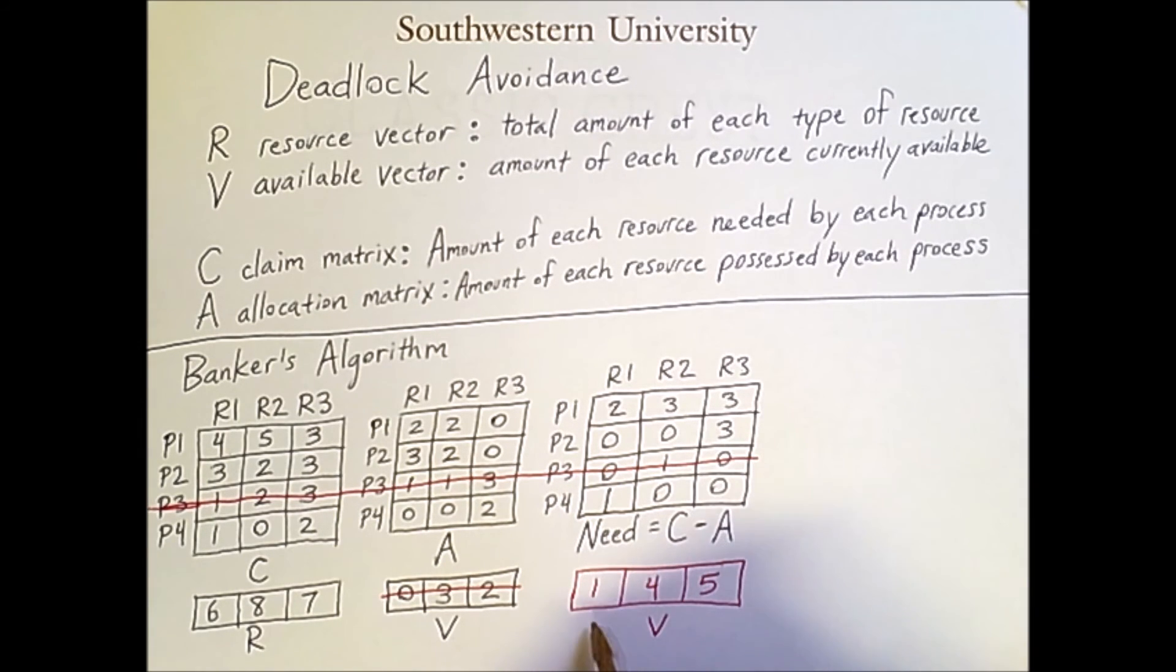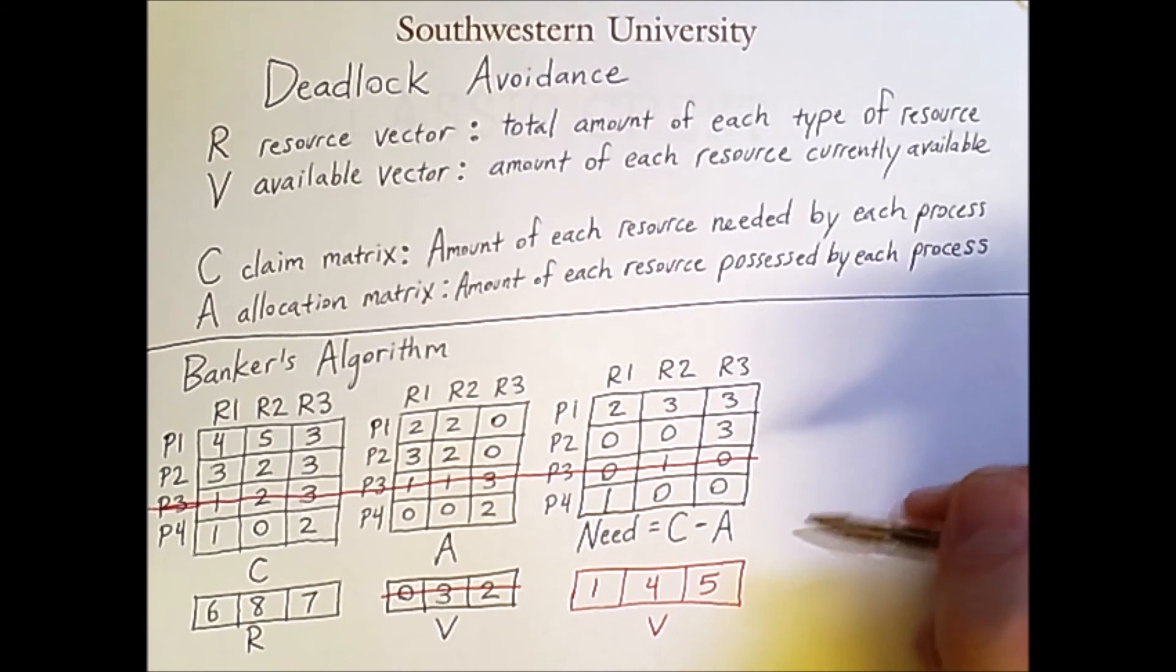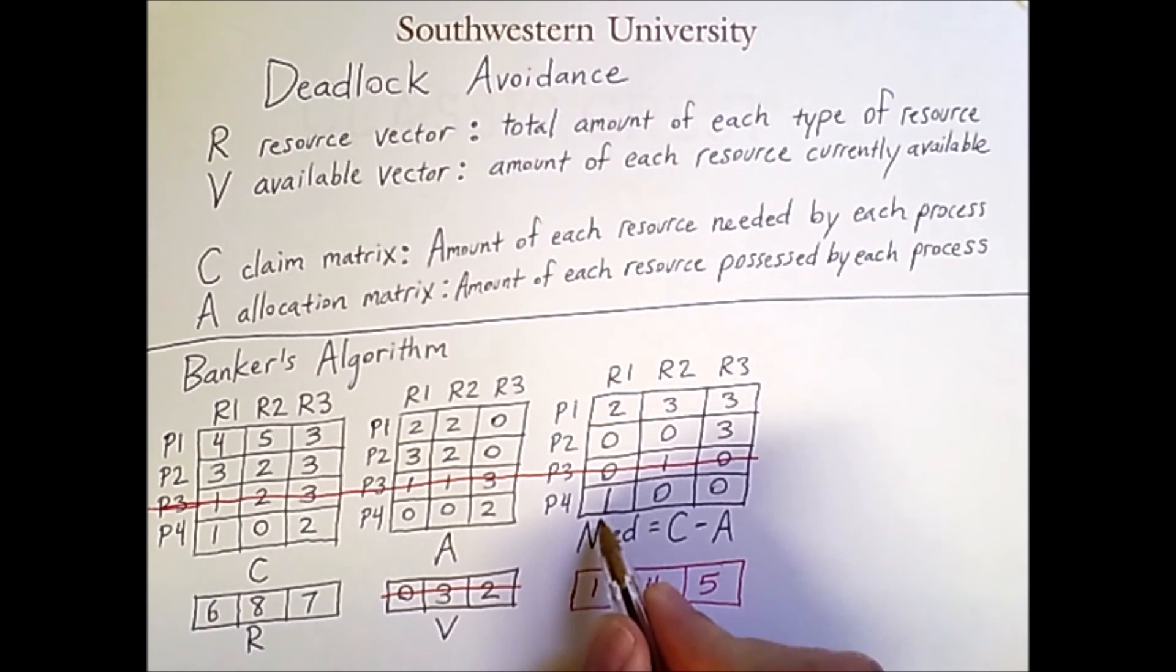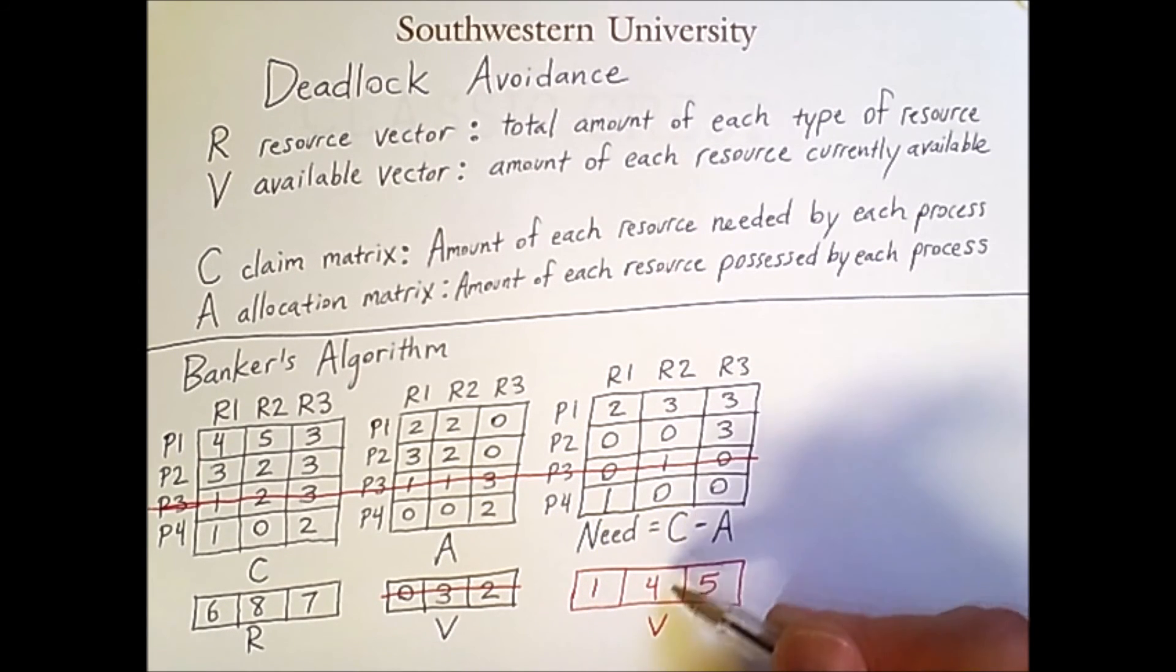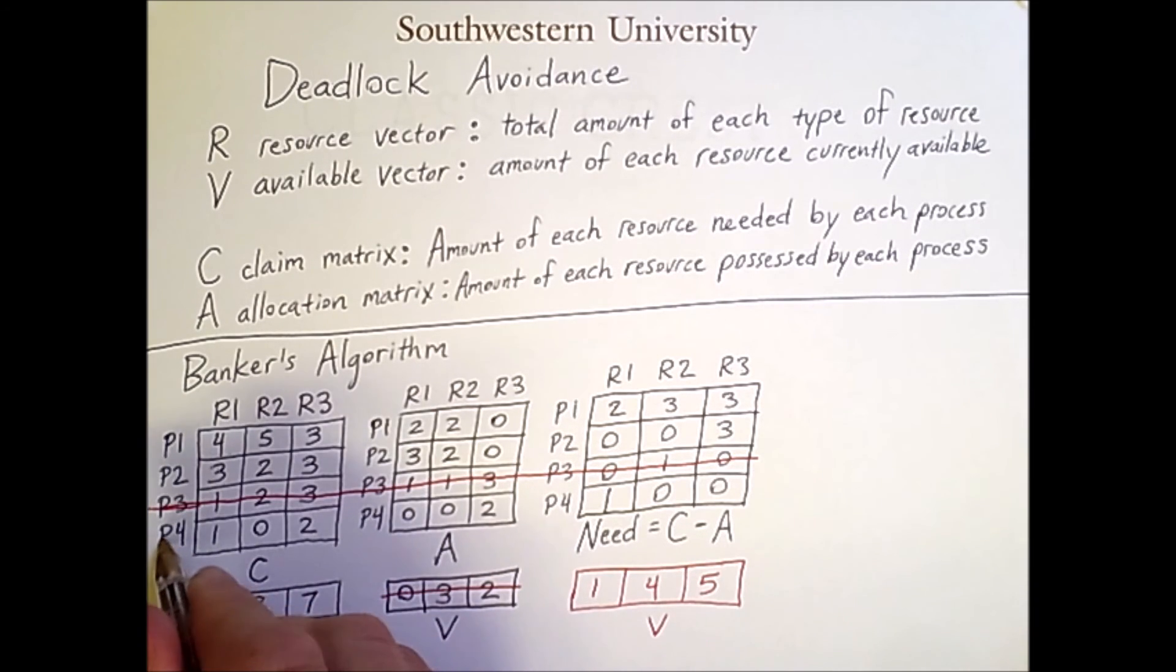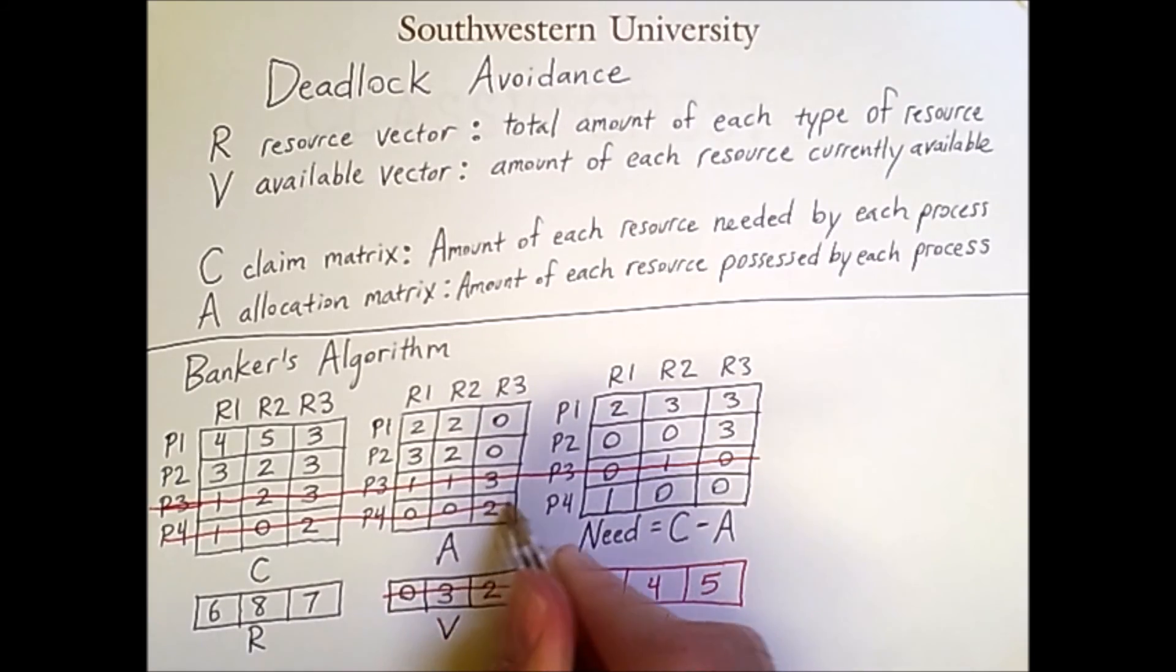So with more resources available, we are now able to run certain processes that we did not have enough resources to safely run before. For example, it is now safe to run process 4, because 1 is less than or equal to 1, and these 0s are clearly less than 4 and 5. So we will run process 4 to completion.